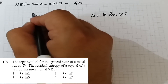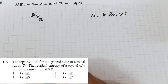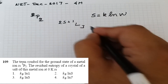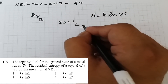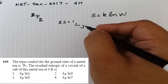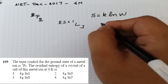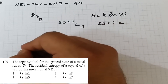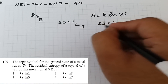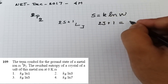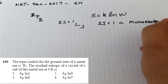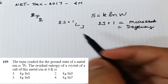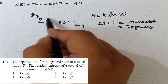In this formula, W is the thermodynamic probability. When a term symbol is given in the form ²ˢ⁺¹L_J, the J value is used to calculate the degeneracy or microstates of the system. The number of microstates is given by the formula 2J + 1.